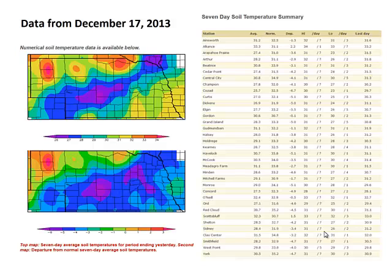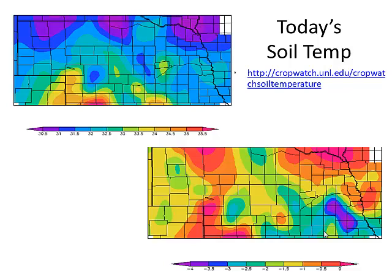Looking at data from the cropwatch website for December, the seven-day average soil temperature was 26 degrees — about five to six degrees cooler than normal, when normally we're right at the freezing mark. Yesterday's soil temperatures for Gosper County showed about 32 to 32.5 degrees at the four-inch level. Even though it was below zero degrees air temperature this morning, the soil temperature at ten centimeters is still not freezing — these are from bare soil plots with no residue cover, so they can warm up pretty fast. We're still about two degrees below normal.